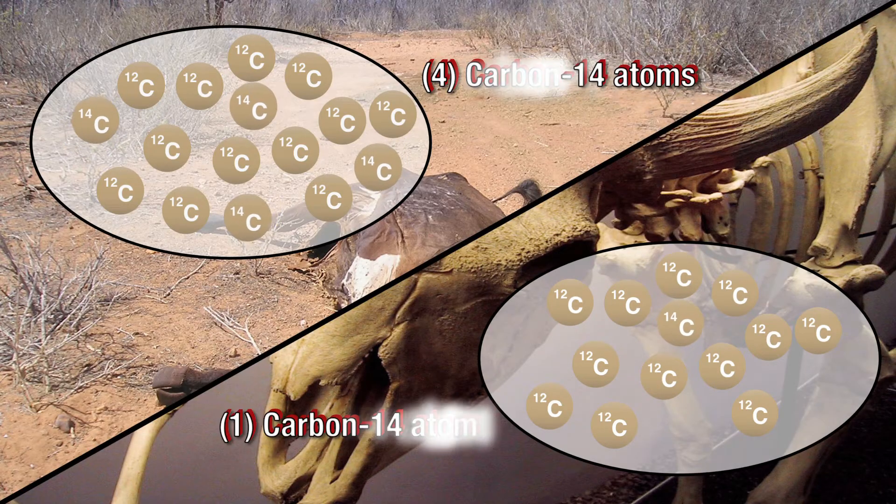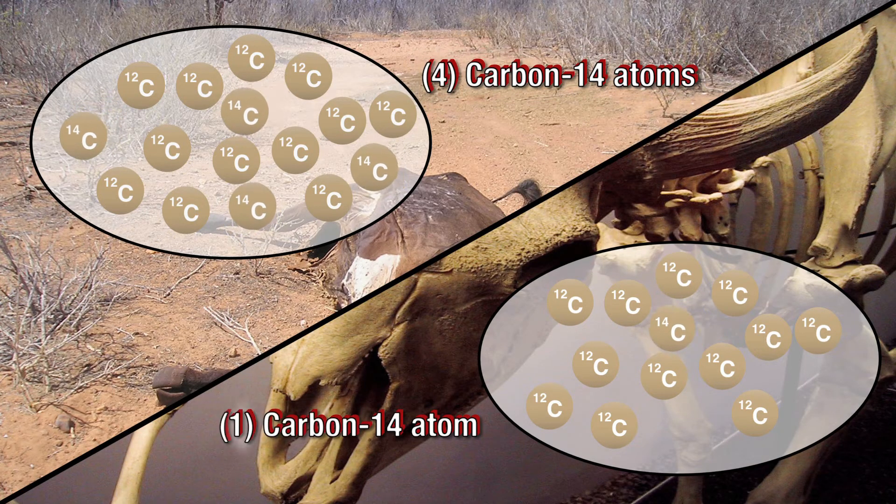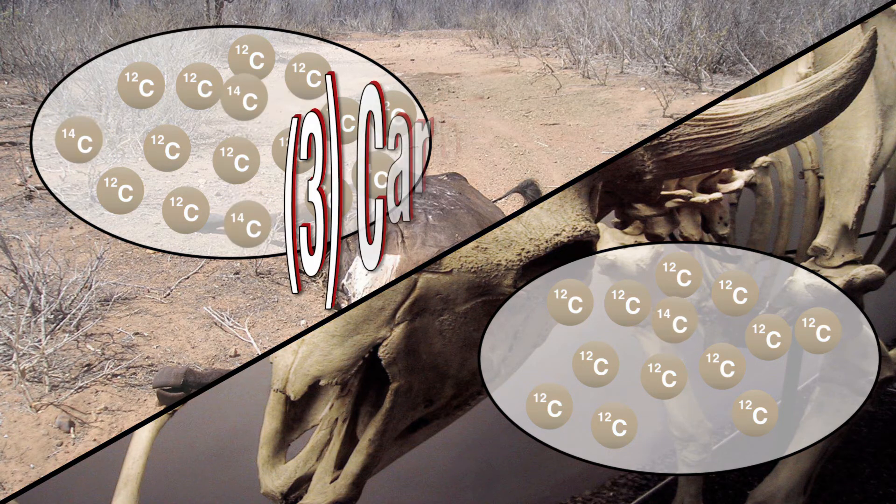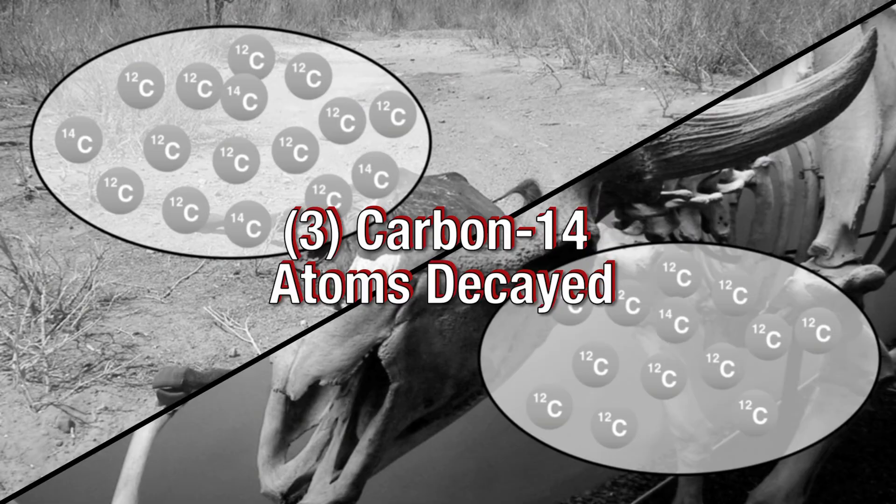Geologists can test for the amount of carbon-14 present in the remains of an organism and compare it to the known ratio of carbon-14 to carbon-12. They will be able to tell how much carbon-14 has decayed since the death of the organism.